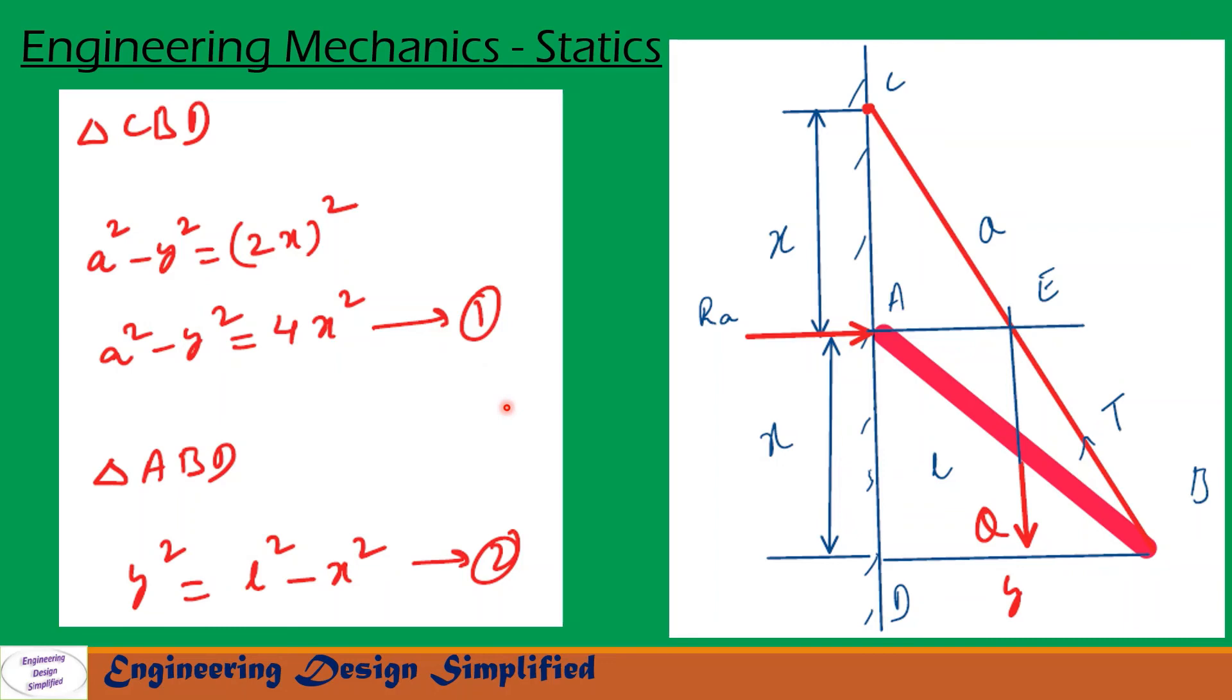Now let us see another triangle, triangle ABD. In this triangle ABD, this side is X, this side is L and this side is Y. From this right angle triangle ABD, we can write Y square equal to L square minus X square. Let us call that equation 2.